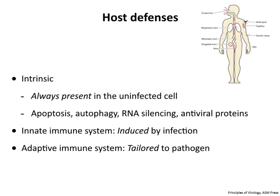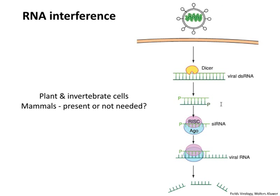Then we have the innate immune system, which is induced by infection. We'll talk about this today and how it works. It is not tailored to the pathogen, and there's no memory in the innate system. As far as we can tell, it's quite ancient. Next time we'll talk about the adaptive immune system, which is tailored to the pathogen. So today: intrinsic and innate immunity.